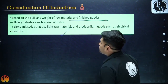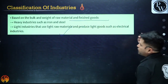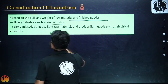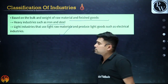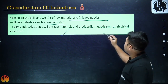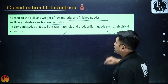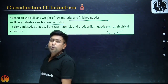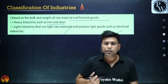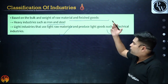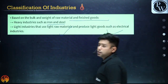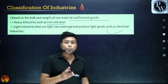Based on the bulk and weight of raw material and finished goods, we have heavy industries — which use heavy raw materials like iron and steel — and light industries, which use light raw materials and produce goods like electrical products.